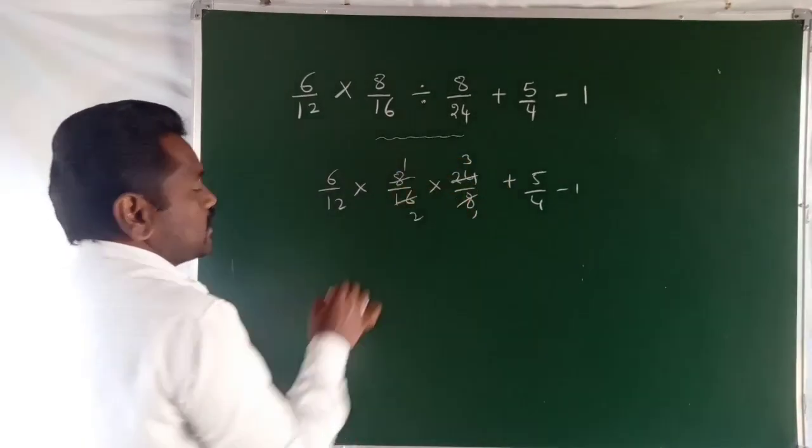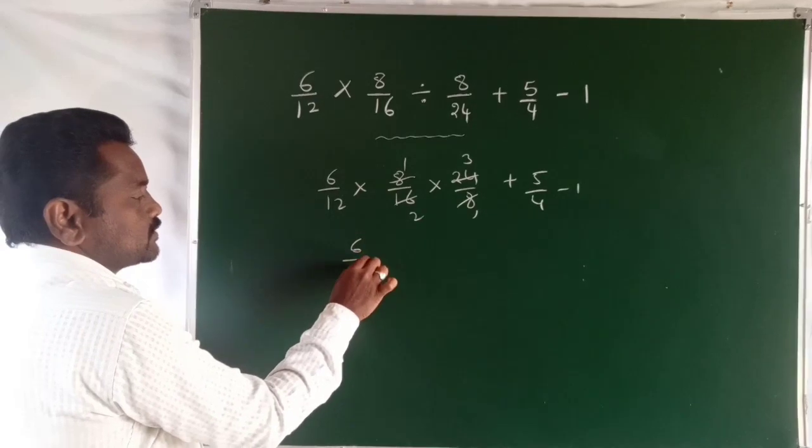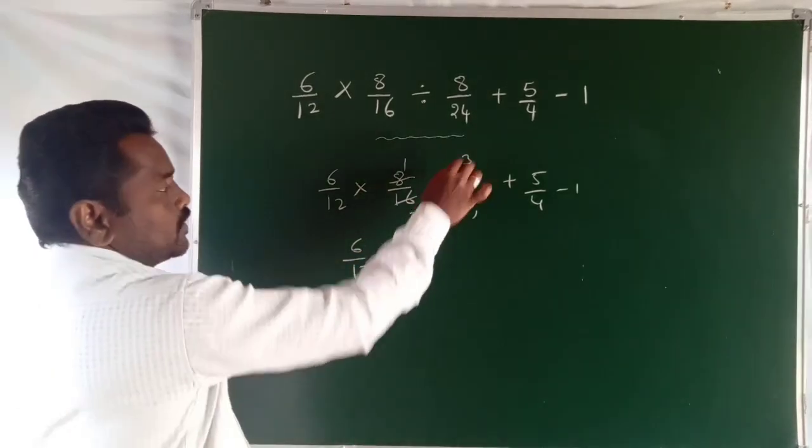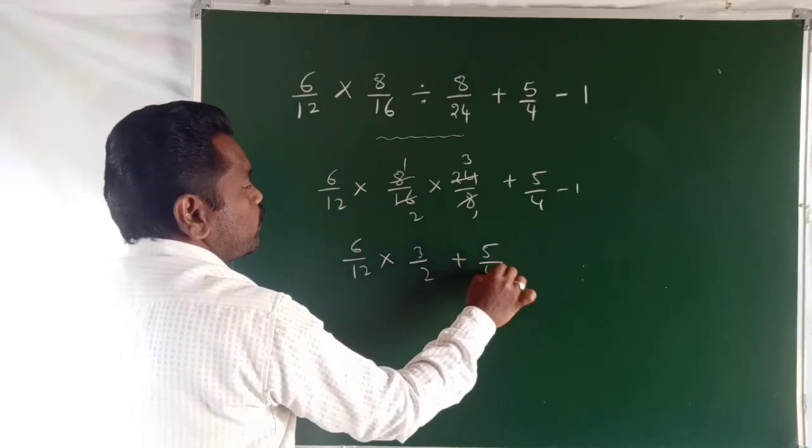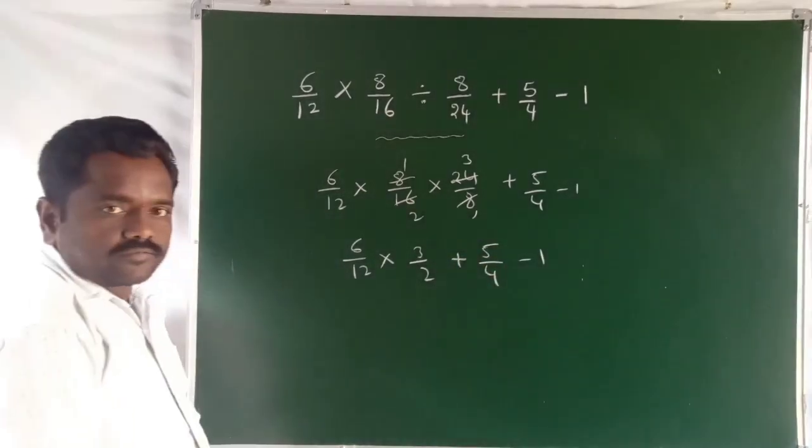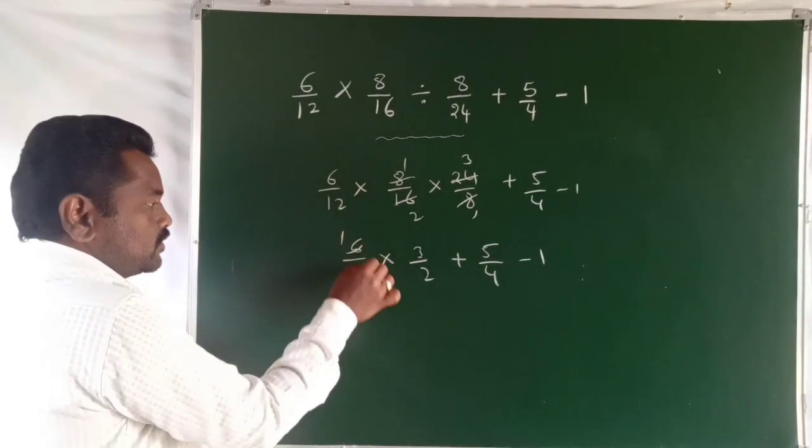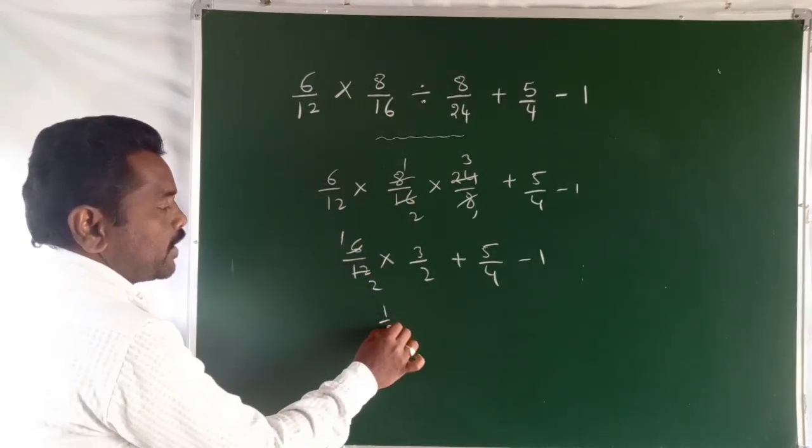Simplification: 6 by 12, which is 3 by 12, that's 3 by 2, plus 5 by 4 minus 1. This is 1 by 2.